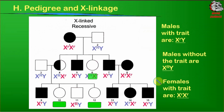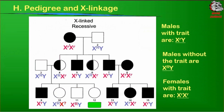The same reasoning applies to number 6. The father has to give X big R, and the mother can only give X big R or X little r — so number 6 is also a carrier. For number 10, an offspring of individuals 3 and 4, number 3 gives X big R to the female. But we don't know which version of the gene the mother gives. There's not enough information — we'd need child data or a genetic test to determine whether she's a carrier. So number 10 is a potential carrier, not a confirmed one. The same logic applies to number 12: she gets X big R from dad, but we don't know what she got from her mother — X big R or X little r — making her a potential carrier too.